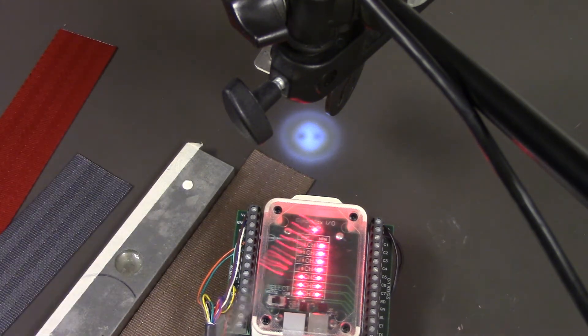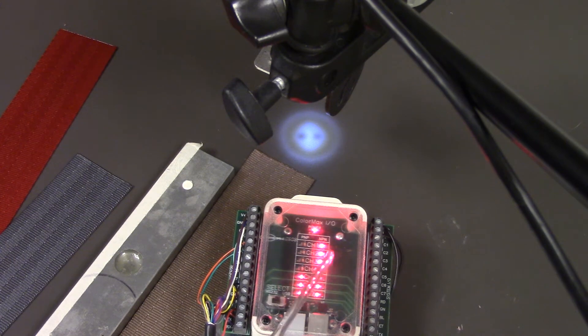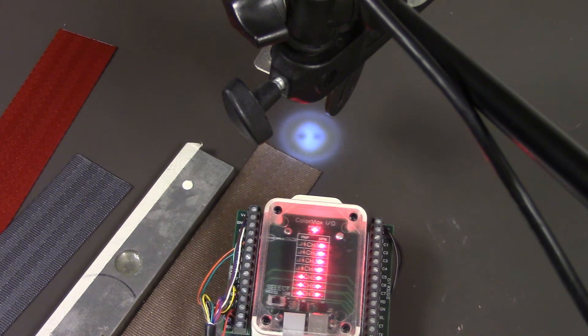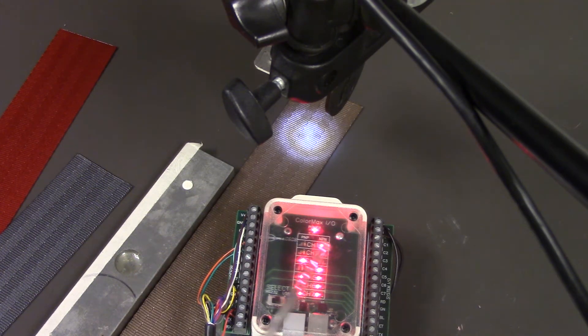We program channel 3, which will indicate in the LEDs on the IO box. As I slide the sample into the sensor's light spot, you see channel 3 has activated.